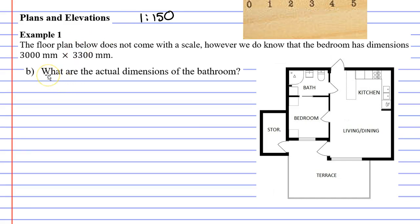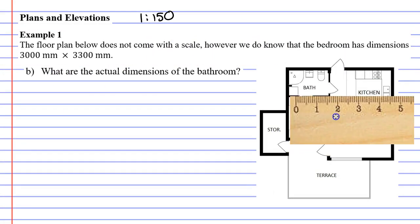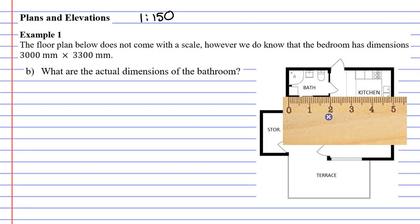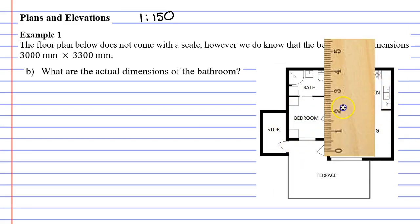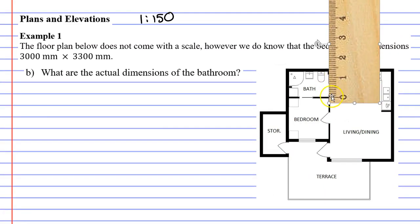Question B says what are the actual dimensions of the bathroom? We'll grab our ruler, here's our bathroom, and we can see it's 2 centimeters wide here and the other wall is about 1.4 centimeters. So it's 2 centimeters by 1.4 centimeters.